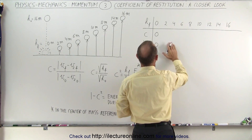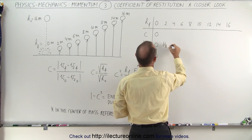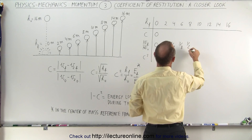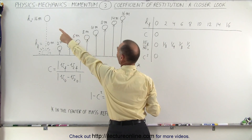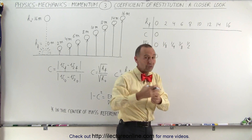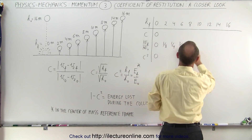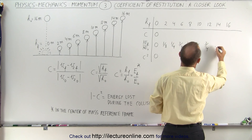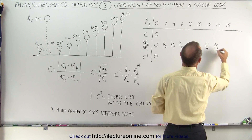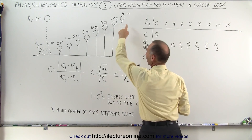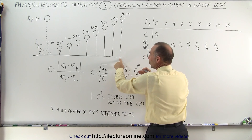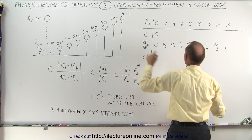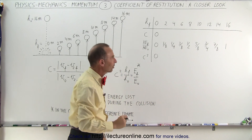Using fractions: bouncing to 2m gives 1/8, 4m gives 1/4, 6m gives 3/8, 8m gives 1/2. When it bounces back up to 8 meters and started at 16, it retained half its energy. At 10 meters that would be 5/8, at 12 meters 3/4, at 14 meters 7/8, and when it bounces all the way back up to the same height it started — a perfectly elastic collision — all the energy is restored and the ratio of final to initial kinetic energy is 1. No energy was lost in that case.